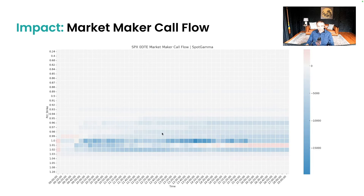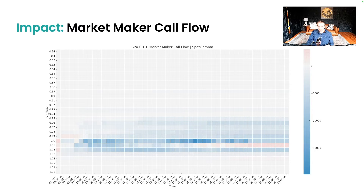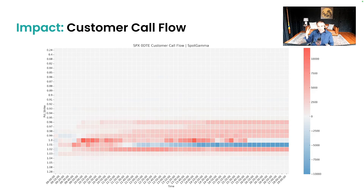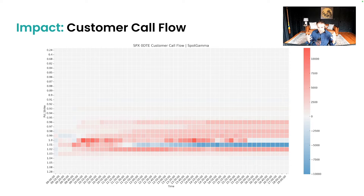Looking at the customer side of the put flow, they tend to be buyers of puts and sellers of slightly out-of-the-money puts on a daily basis. It seems there's a little more of a long position from the customer side. For the call flow, generally calls are being sold from at-the-money to up by the dealer community. If the market is not moving very much, this should be a fairly profitable trade for market makers on average.